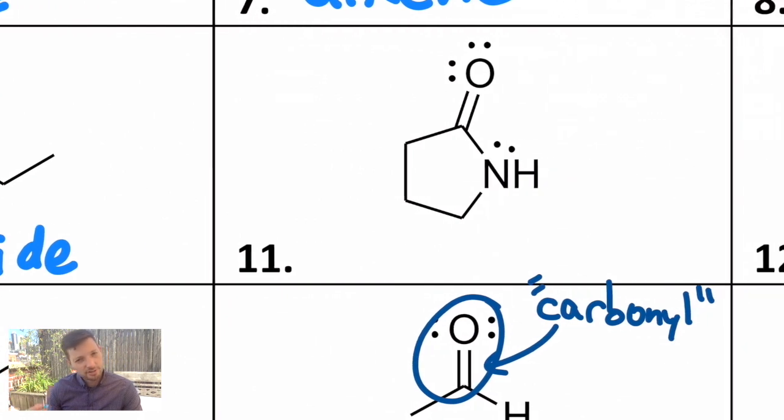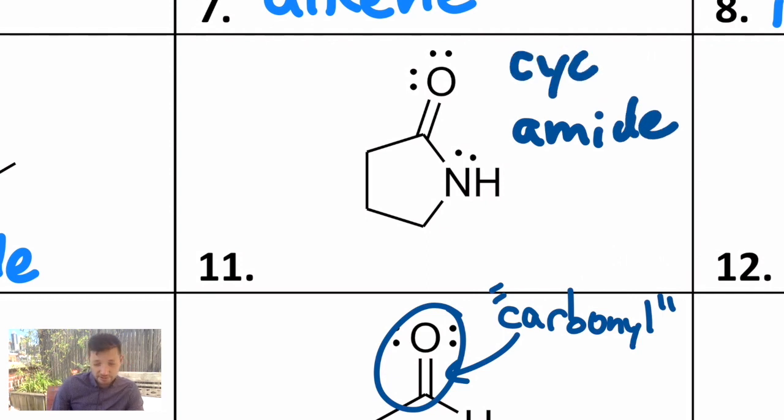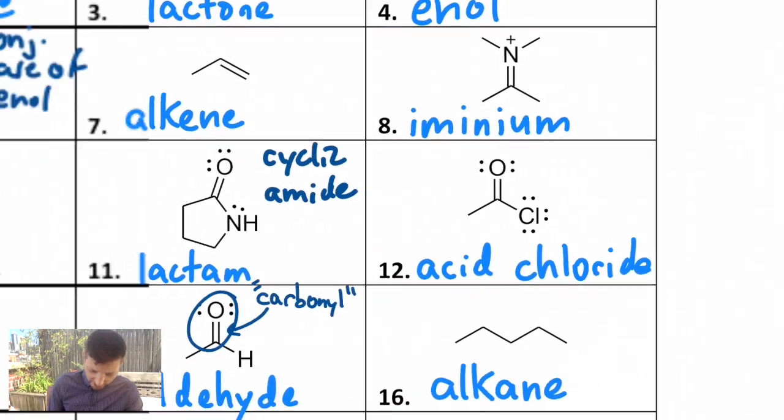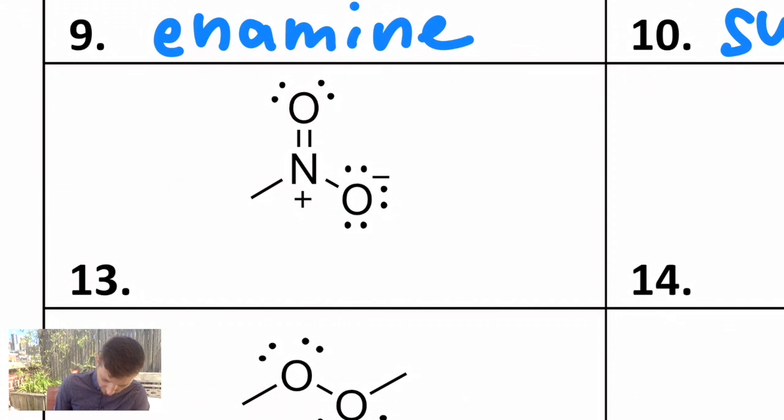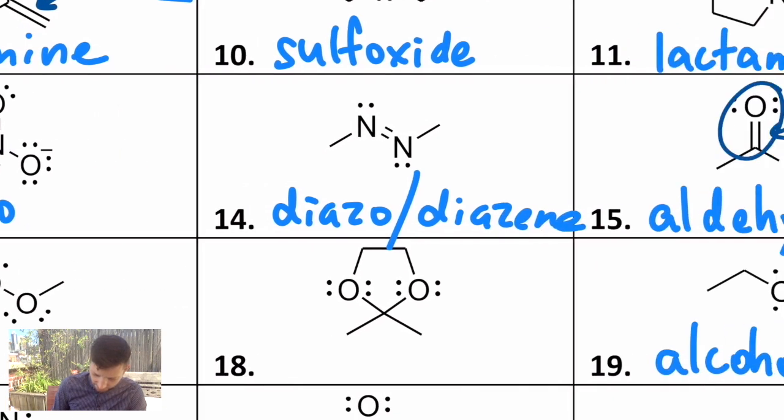Ten is a sulfur with an oxygen, aka a sulfoxide, that's the name. Eleven looks very similar to number one and it is. It is also an amide but it's cyclic. I'm not gonna go to the etymology of this but a cyclic amide is called a lactam. This is a five-member lactam but just like the lactone it doesn't have to be limited to that ring size. That's it for that row. Then we get to thirteen and fourteen. Thirteen, the nitrogen with two oxygens attached to it, that's called a nitro group. Two nitrogens doubly bonded to each other is called a diazo sometimes a diazene. We'll hear both of those. That's it for that row.